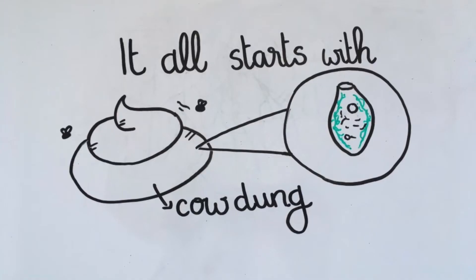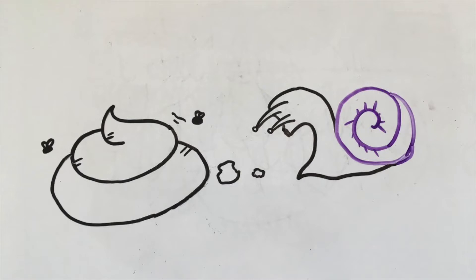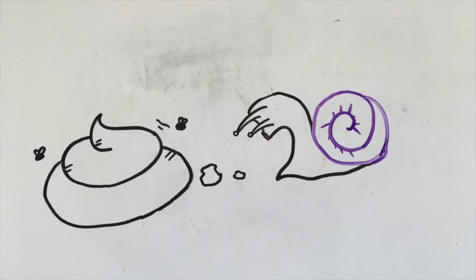As in all things of course, it all starts with cow dung. The embryonated eggs of this parasite are found in cow feces. A snail will use this as its source of food, unknowingly ingesting the parasite. The snail is now the intermediate host.